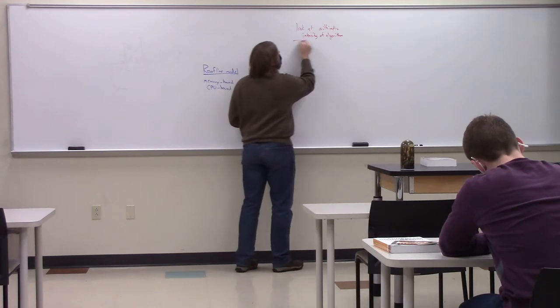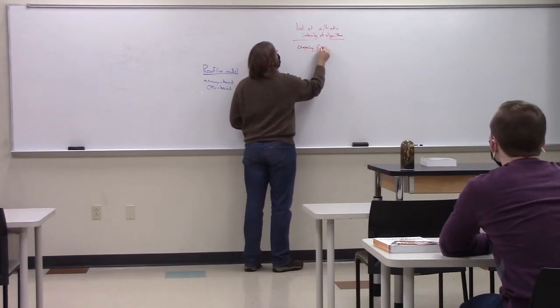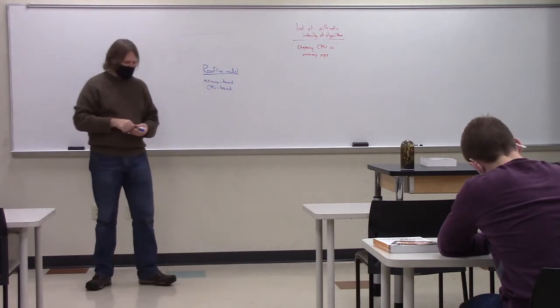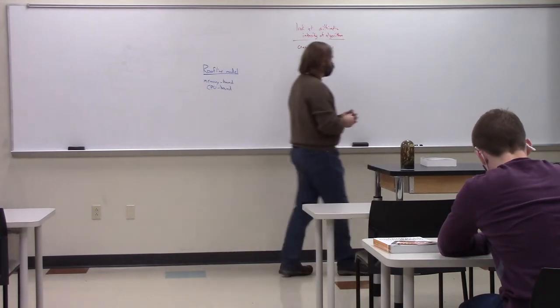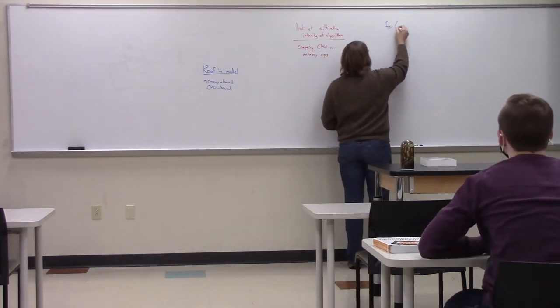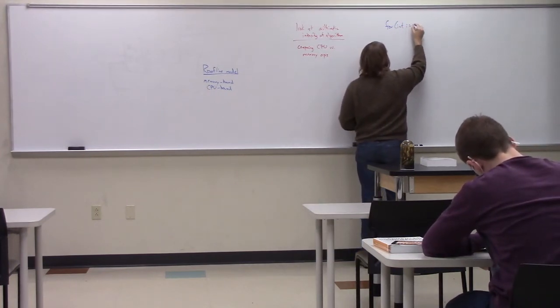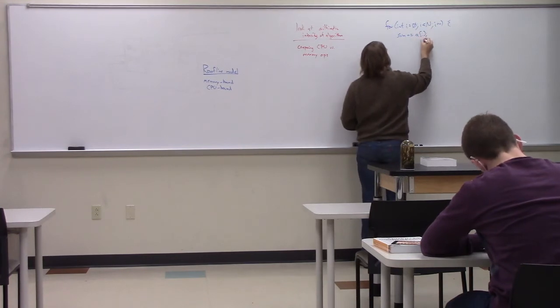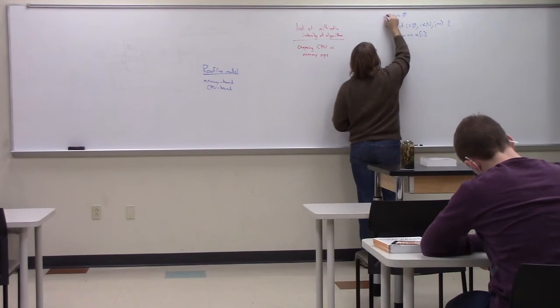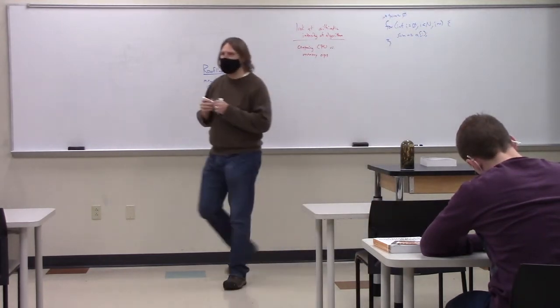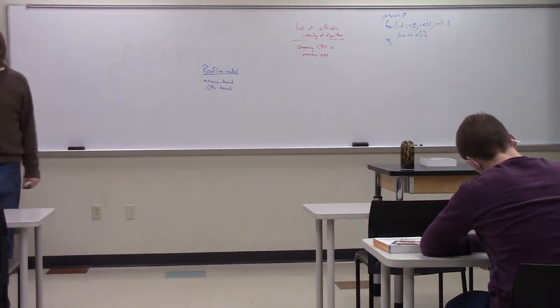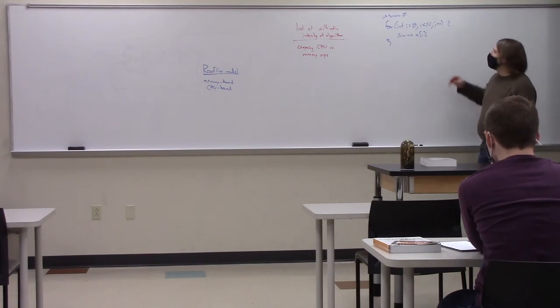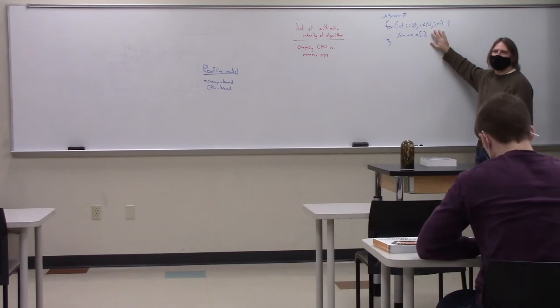In other words, we want to compare how many CPU operations it requires to the number of memory operations that it requires. Okay. So we're comparing CPU versus memory operations. So this is a standard summation. All right. Okay. Where we're going through an array of values, and we're just adding them all up into a sum.